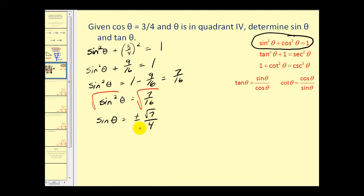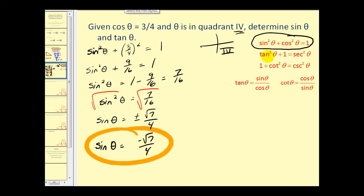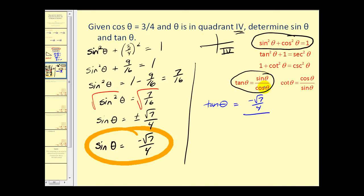We need to determine whether to take the positive or negative value of sine theta. Since the angle is in the fourth quadrant, the y-coordinate is negative; therefore sine theta is negative. So sine theta equals negative square root of seven over four. To find tangent theta, we use the quotient identity: tan theta equals sine theta over cosine theta, which is (−√7/4) divided by (3/4). Multiplying top and bottom by four gives tangent theta equals negative square root of seven over three.